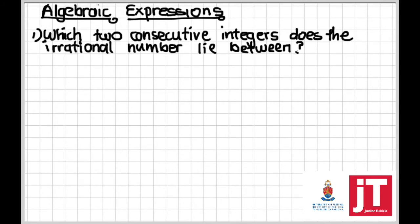Which two consecutive integers does the irrational number lie between? The irrational number we are dealing with is the square root of 69. If you say square root of 69 you're going to get 8-point-something. The question is, how do you get those integers? You need to apply your knowledge of perfect squares — ask what two perfect squares are closest to 69.